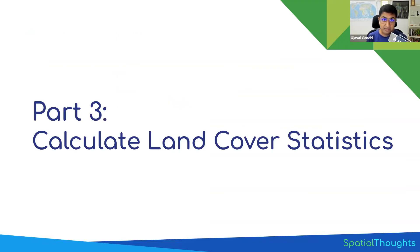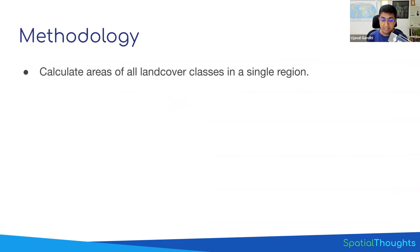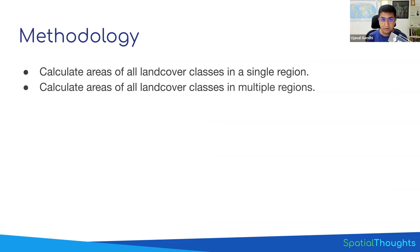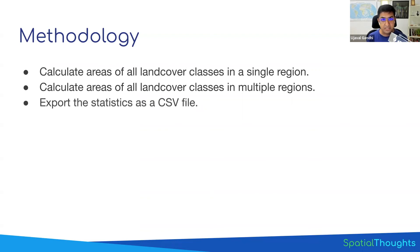In part three, we'll compute some statistics. We'll take the region that you selected and compute what is the area covered by each of those 11 classes, getting a list of different classes and their respective areas. We'll also learn how to scale this across different regions — selecting all the admin2 regions in a particular state or province and doing the same analysis for each without manually repeating all of that. We'll use advanced coding techniques with MapReduce, then export the results as a CSV file you can download to your computer.